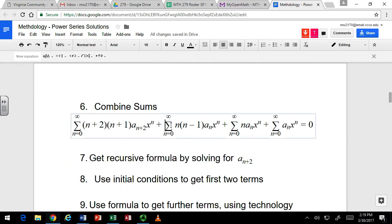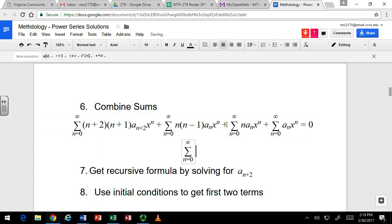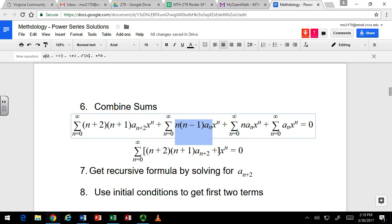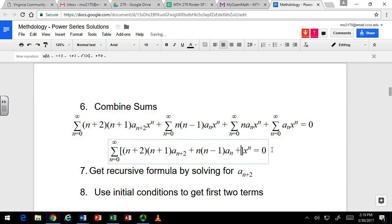So what's this going to look like? It's going to have that summation there. And then it's going to have an x to the n. And in brackets, we'll have everything else. So from the first series, we've got n plus 2, n plus 1, a sub n plus 2. From the second, we've got n times n minus 1 times a sub n. From the third, we've got n times a sub n. And from the last one, just a sub n.